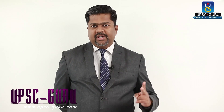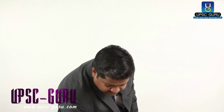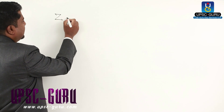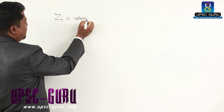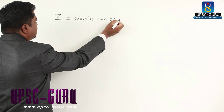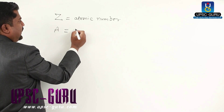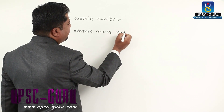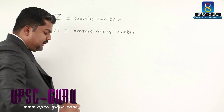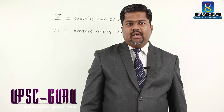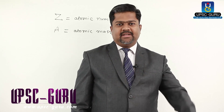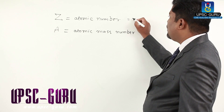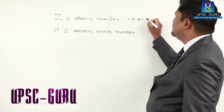We are discussing how electrons are distributed in the atom. For that purpose, we must be aware of two principles basically. The first is Z, called the atomic number, and the second is A, the atomic mass number. These two concepts are important. Atomic number corresponds to the number of protons or the number of electrons.